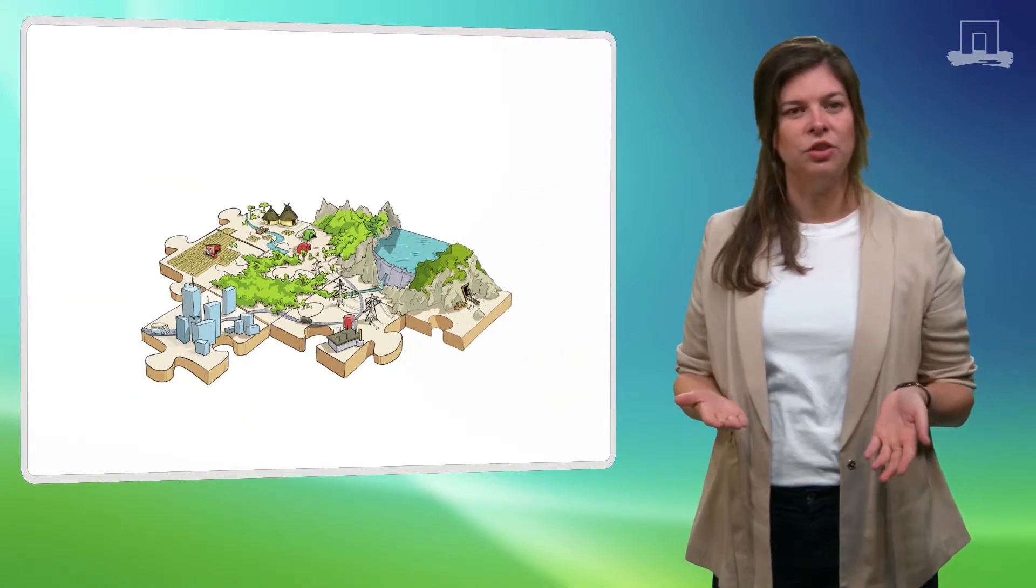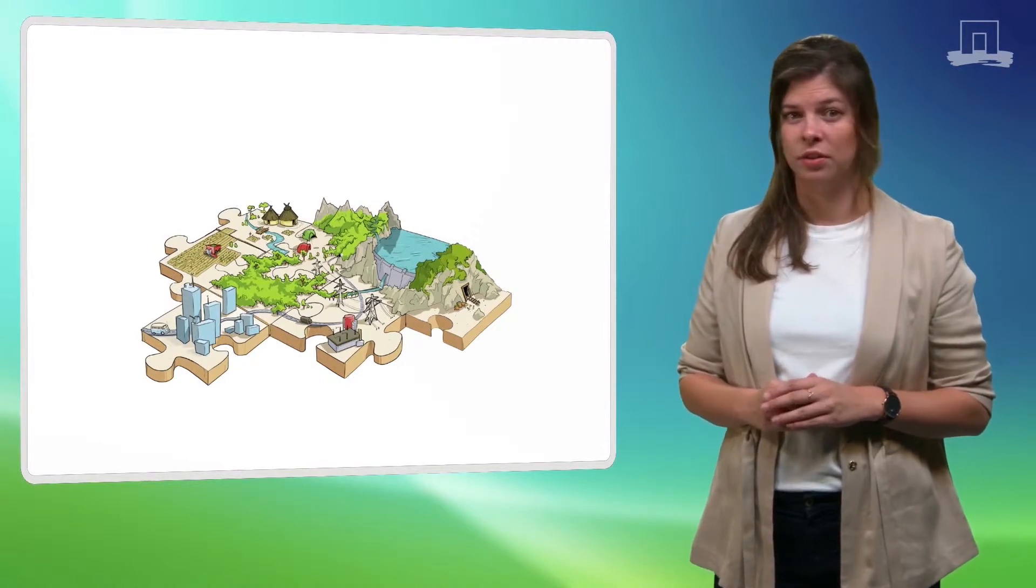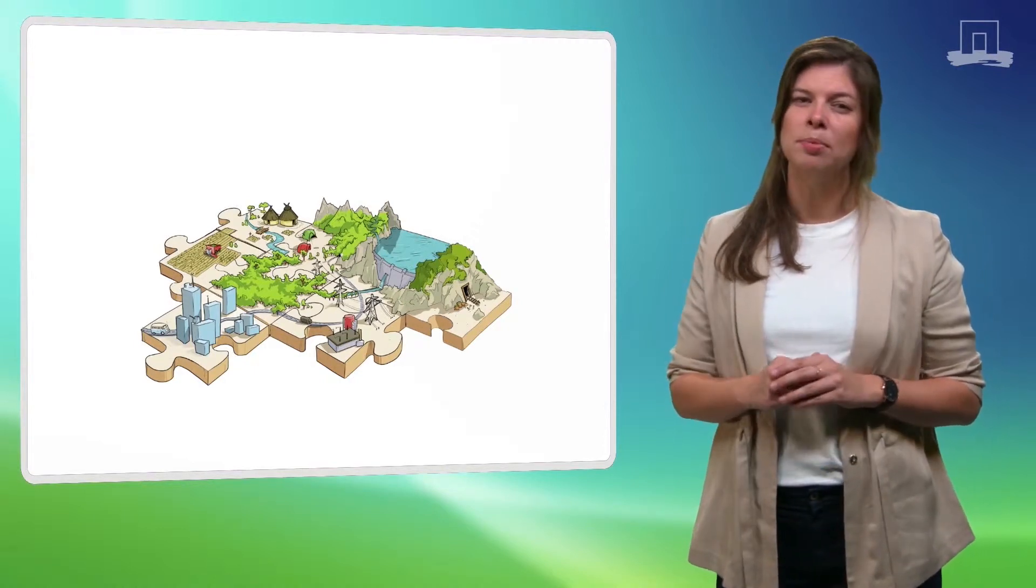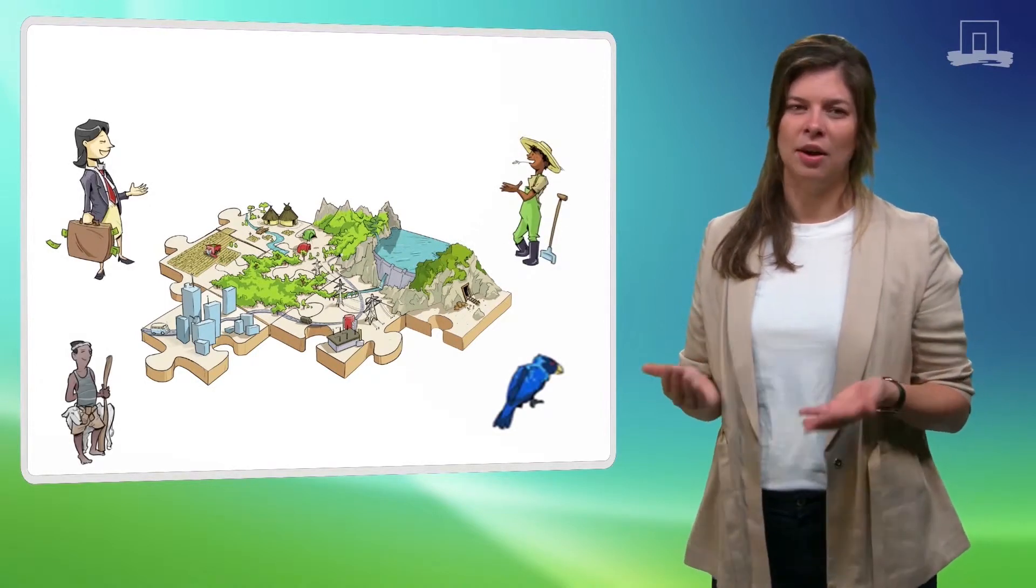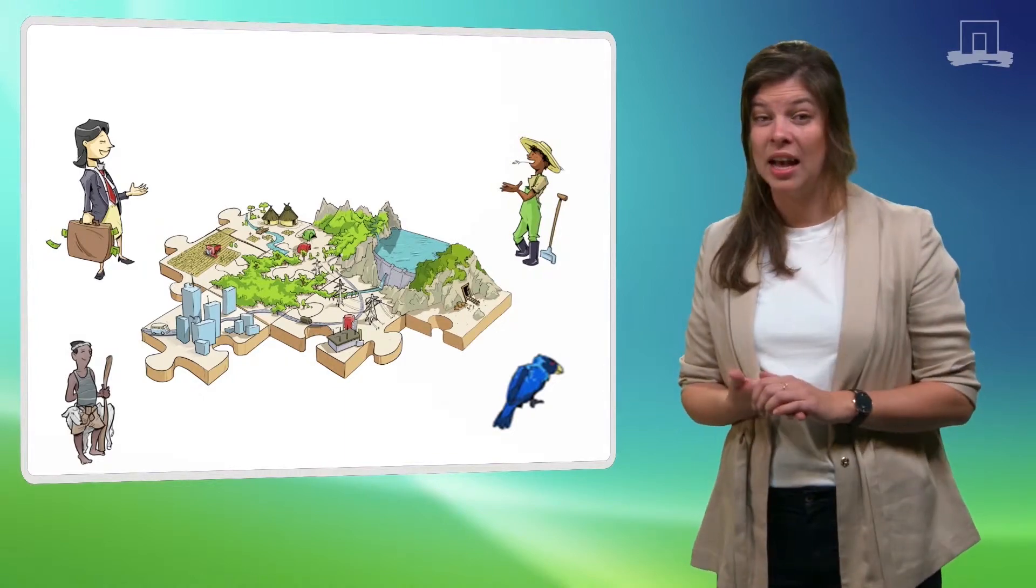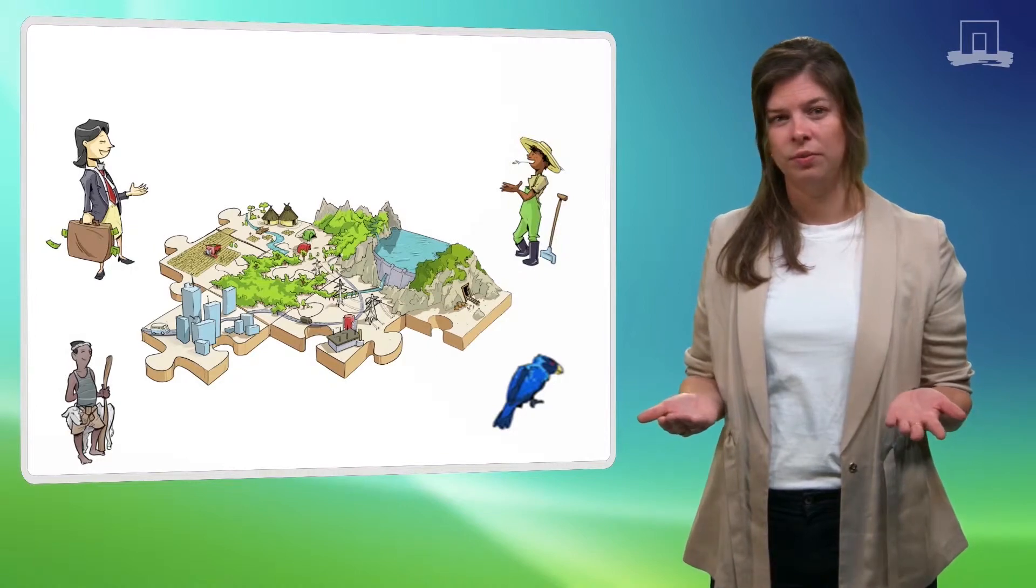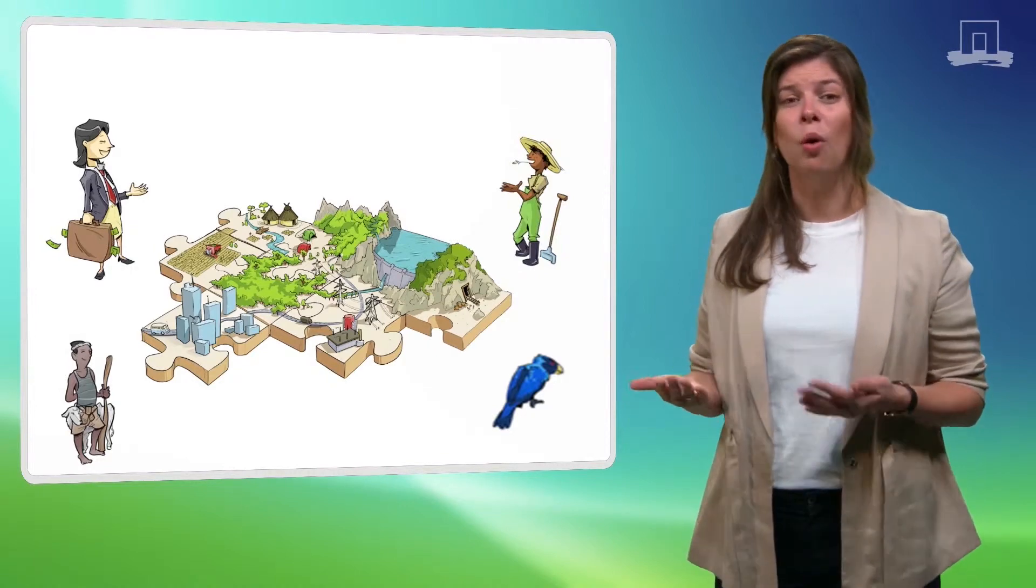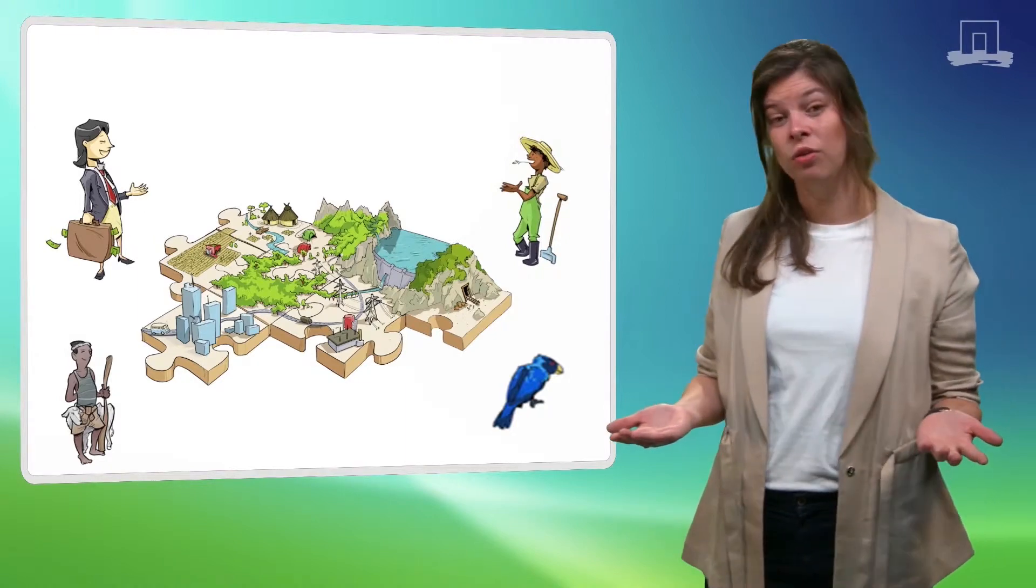While some changes are visible, others are invisible, especially for outsiders. An example is changing power relations. Many people inside and outside the landscape have a certain interest in the area. Access to land or access to resources or certain cultural linkages. However, not all players have the same level of decision-making power, which can trigger conflicts.